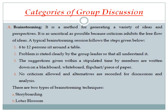In the brainstorming method, 6 to 12 persons sit around a table. The problem is stated clearly by a group leader. Suggestions are given within a stipulated time by members by writing them down on a blackboard, whiteboard, flip chart, or a piece of paper. No criticism is allowed, and alternatives are recorded for discussion and analysis. There are two types of brainstorming techniques: storyboarding and lotus blossom.